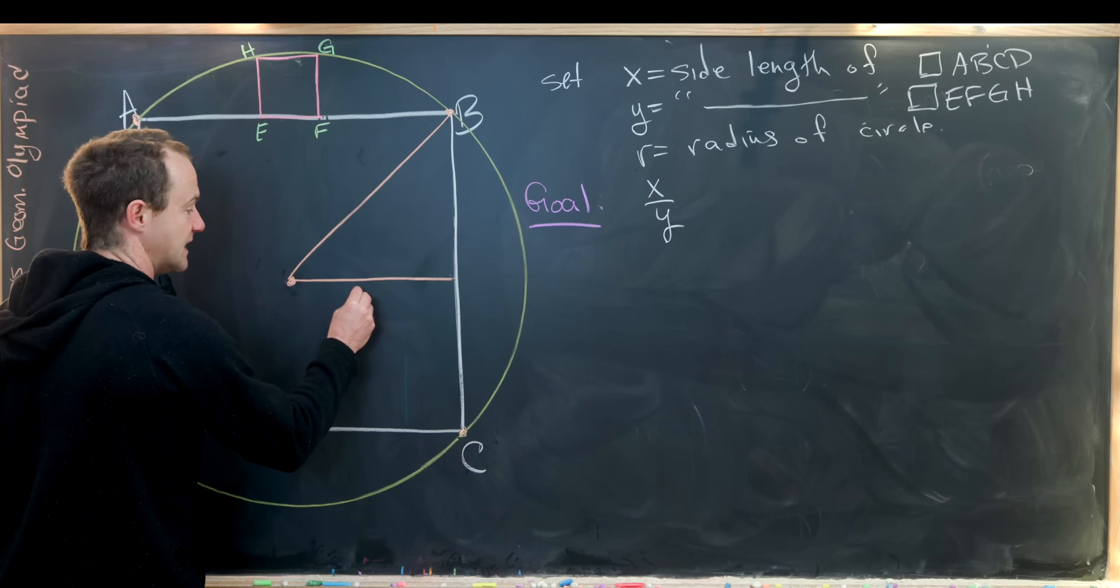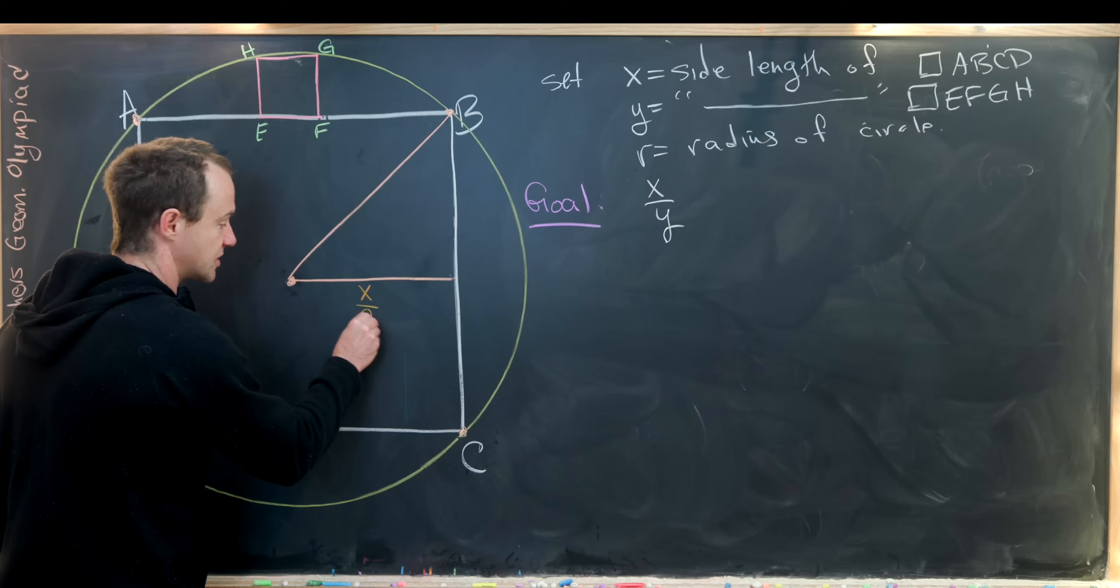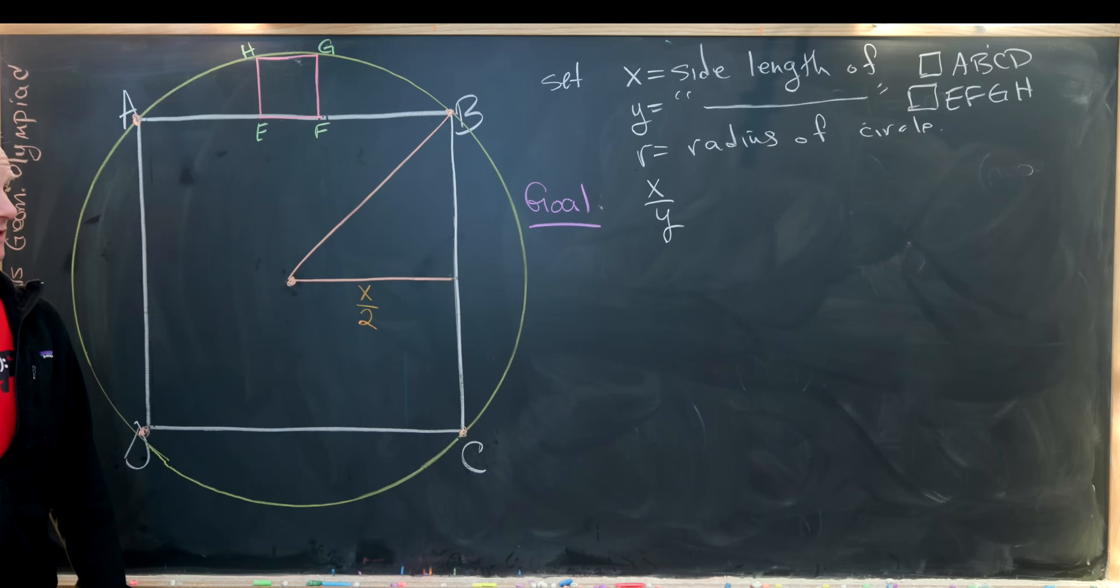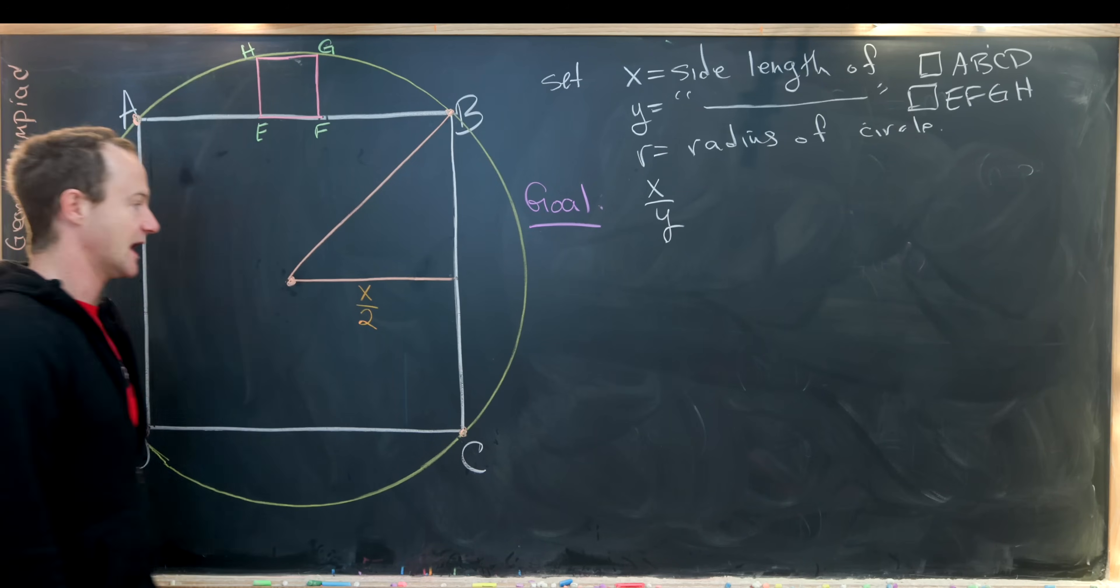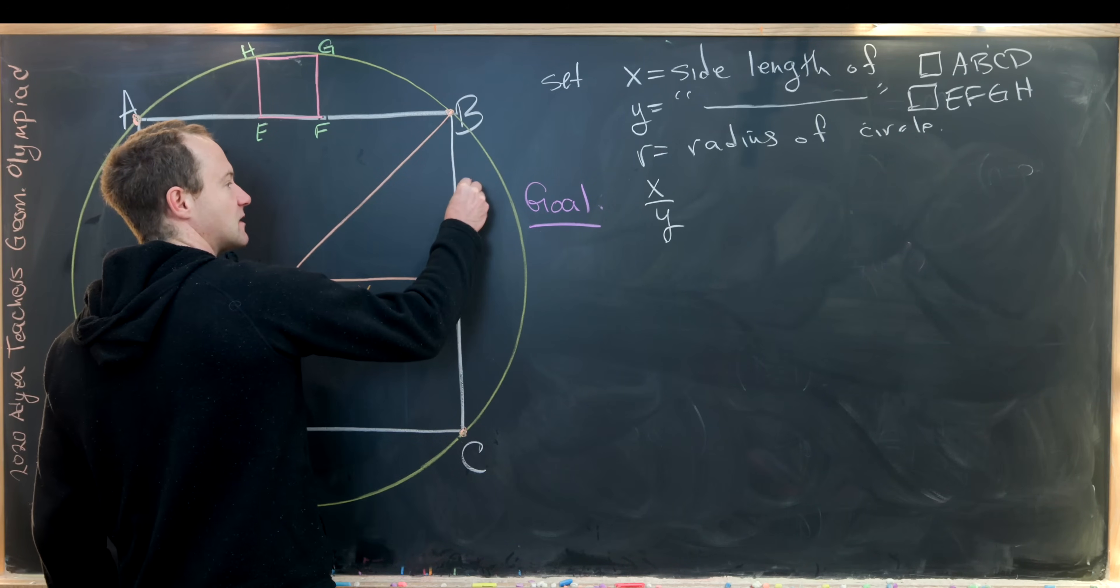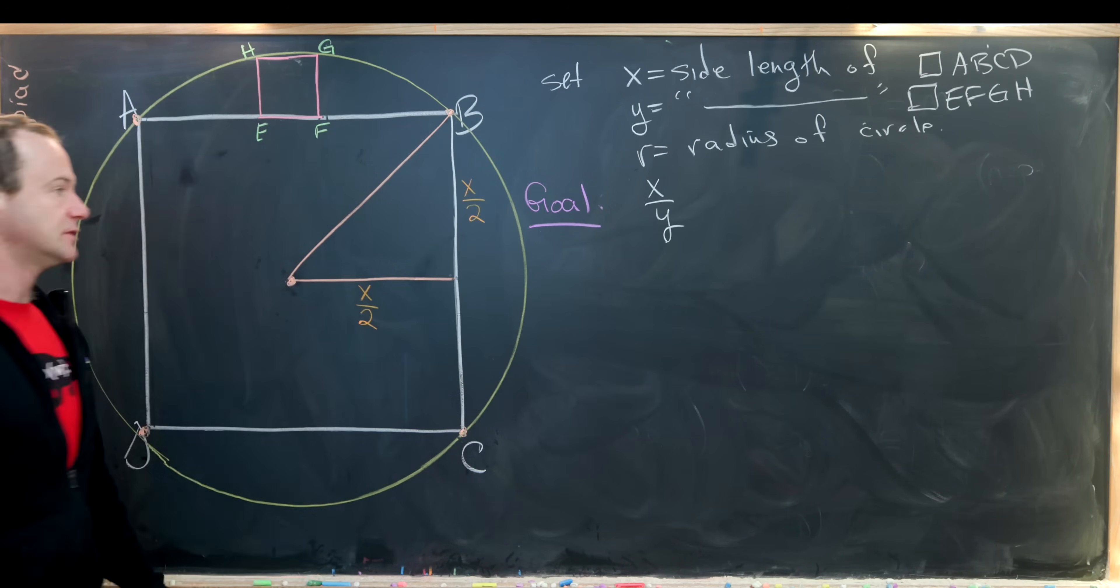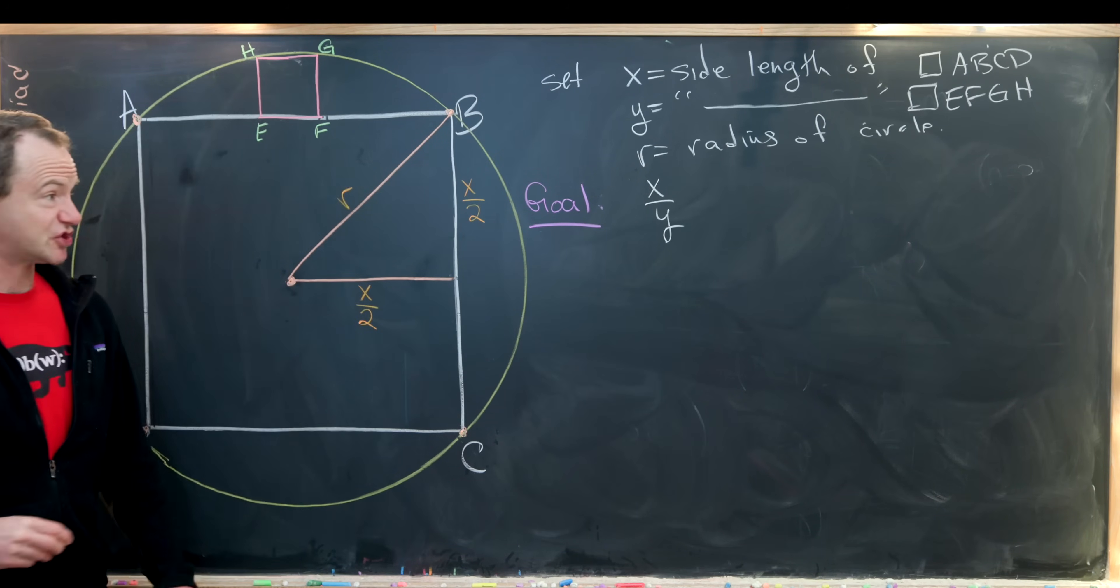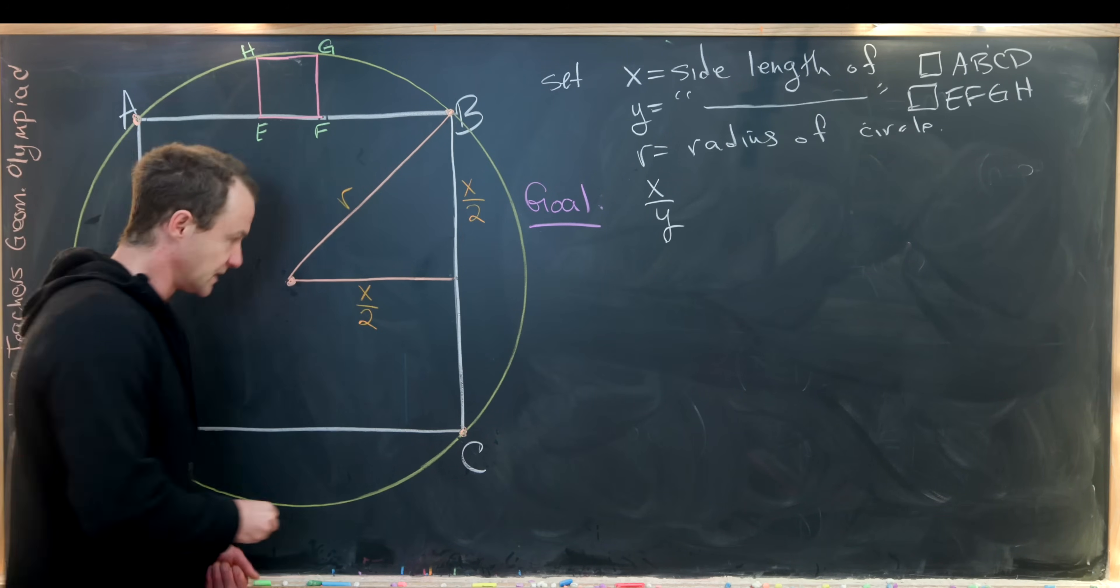And then it's pretty easy to measure these lengths. So this length right here will be exactly X over 2 because all the way across would be the side length of the square which we determined to be X. And then this up here likewise will be X over 2. And then finally this guy right here is clearly R, the radius of the circle.